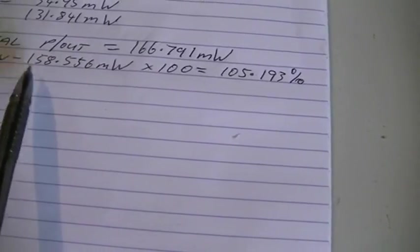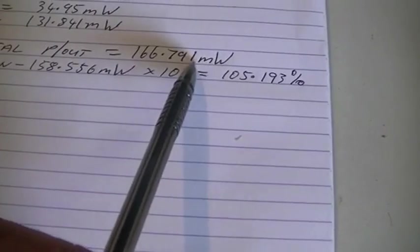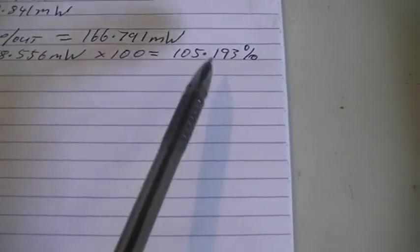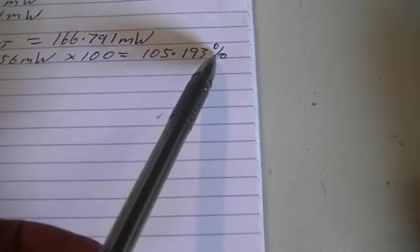So we divide our power out by our power in times that by 100. And we end up with 105.193% efficiency.